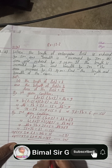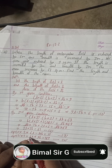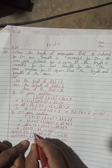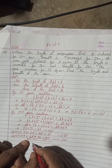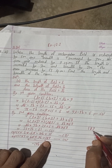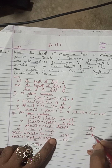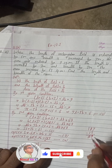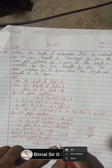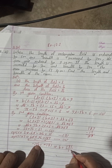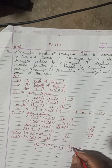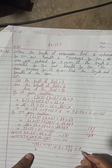Now subtract Equation 3 from Equation 4. The 6L cancels. We get: 9B − (−10B) = 183 − 12, which gives −10B subtracted means 9B + 10B = 19B. So −19B = 12 − 183 = −171. Therefore B = 171 ÷ 19 = 9. So B equals 9.